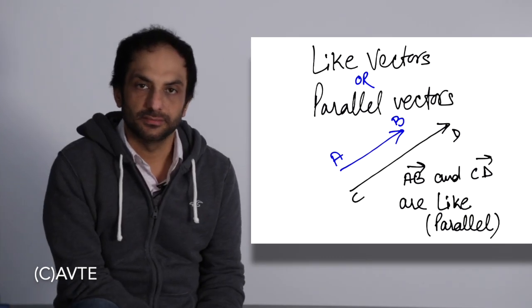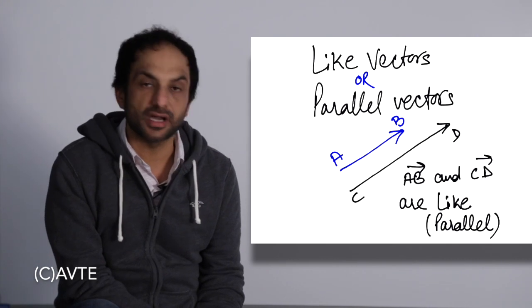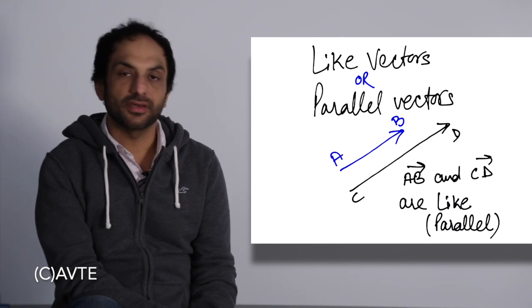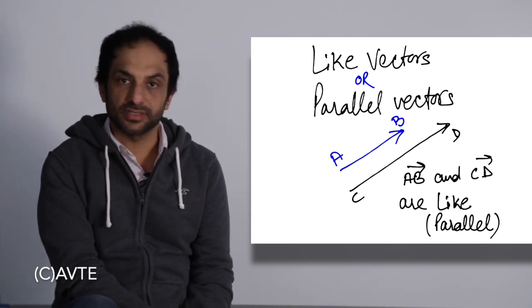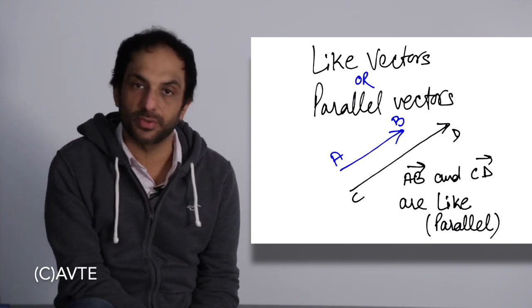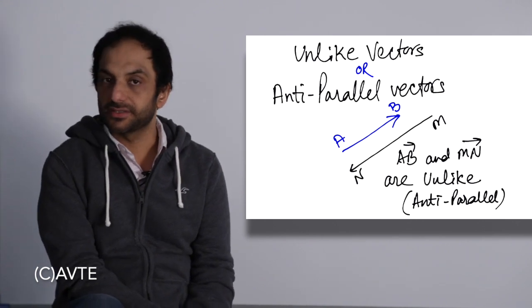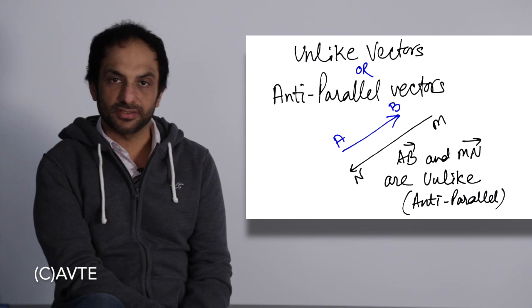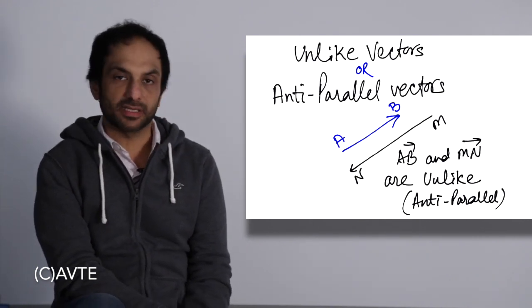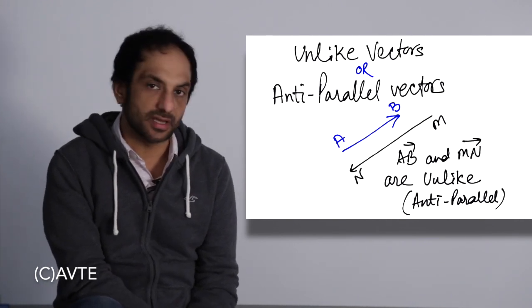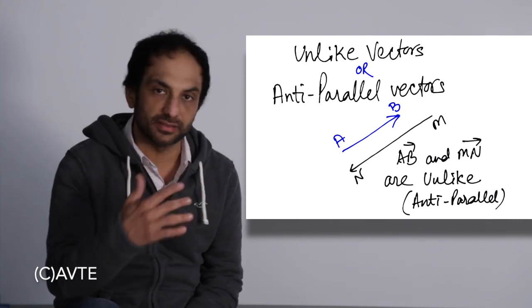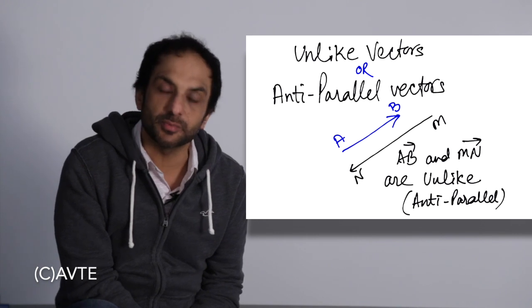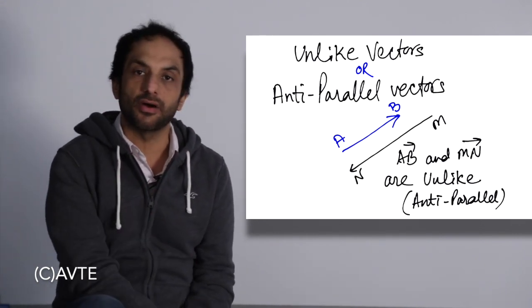Like vectors and parallel vectors are the same. Vectors are like or parallel when they are in the same direction — their magnitudes may differ but their direction should be the same. Vectors having the same direction are called like vectors or parallel vectors. Unlike vectors, or anti-parallel vectors, are vectors in the opposite direction. If they are in the same direction they are like or parallel, but if they are in the exact opposite direction, then only they are called unlike or anti-parallel vectors.